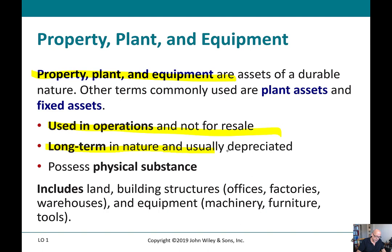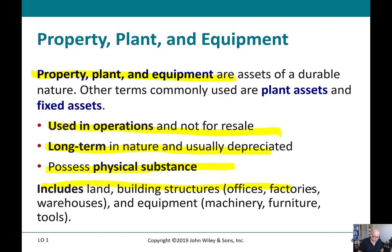To qualify as PP&E, assets must be used in operations, tend to be long-term, and possess physical substance. The reason we call out physical substance is that there are intangible assets covered in Chapter 12 that don't have physical substance but do have probable future economic benefit and qualify as assets. Instead of depreciation, we talk about amortization for those. The usual suspects for PP&E include land, building structures, factory and office buildings, equipment, machinery, and furniture.